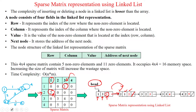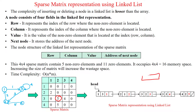The head node may have null because only two nodes have been created so far. Now we create the third node with value three, using four fields: row number three, column number two, and value three. The new node initially has null, then the link is created to attach it to the list.